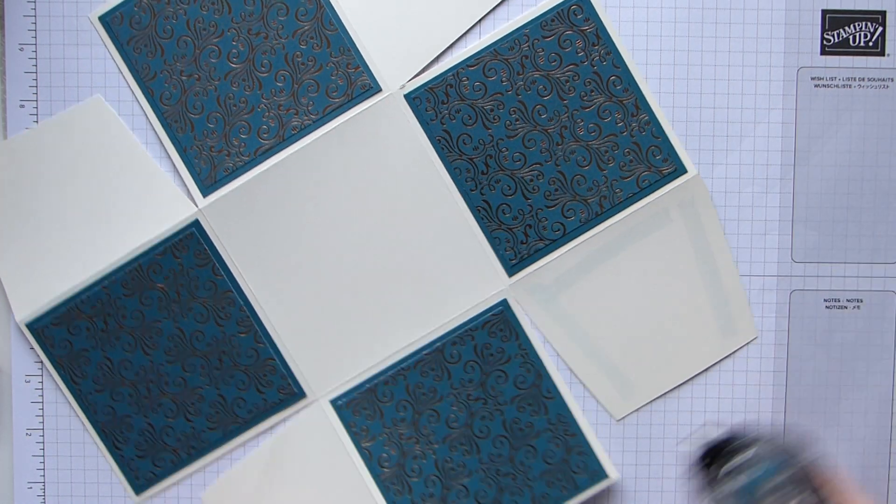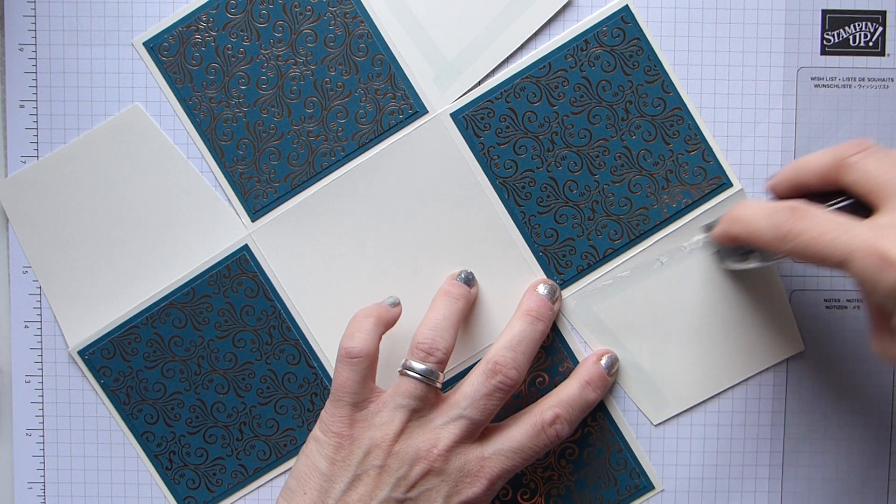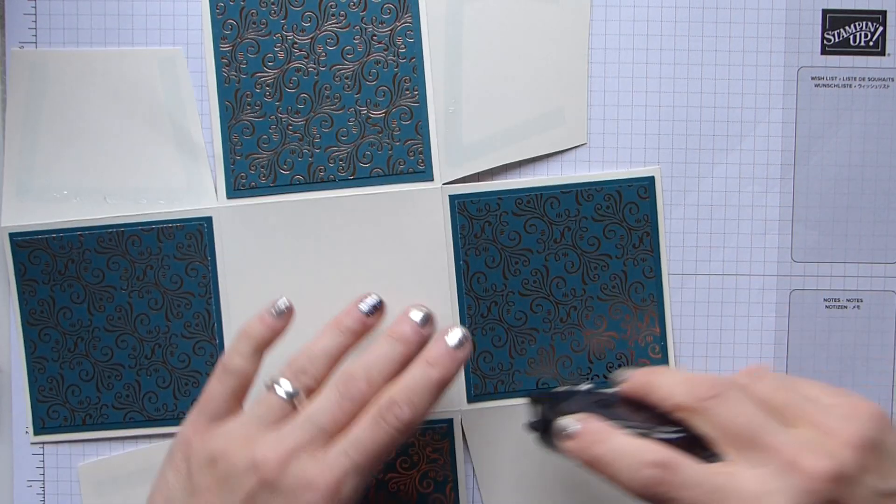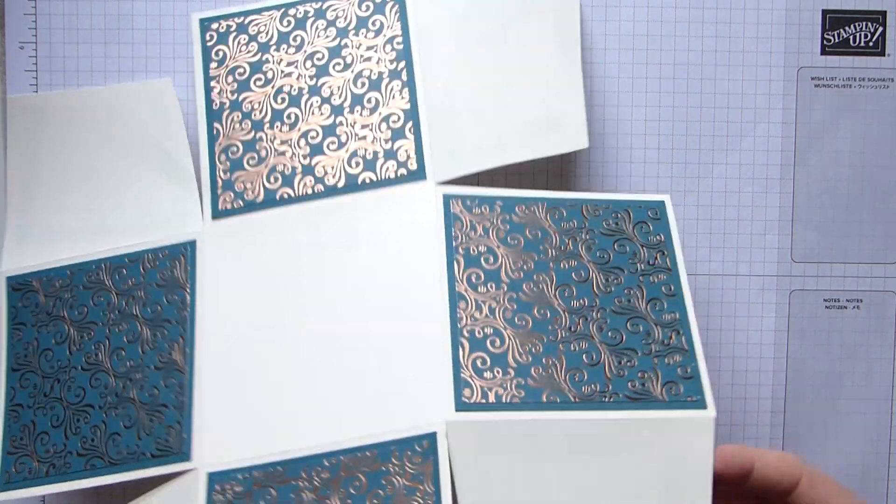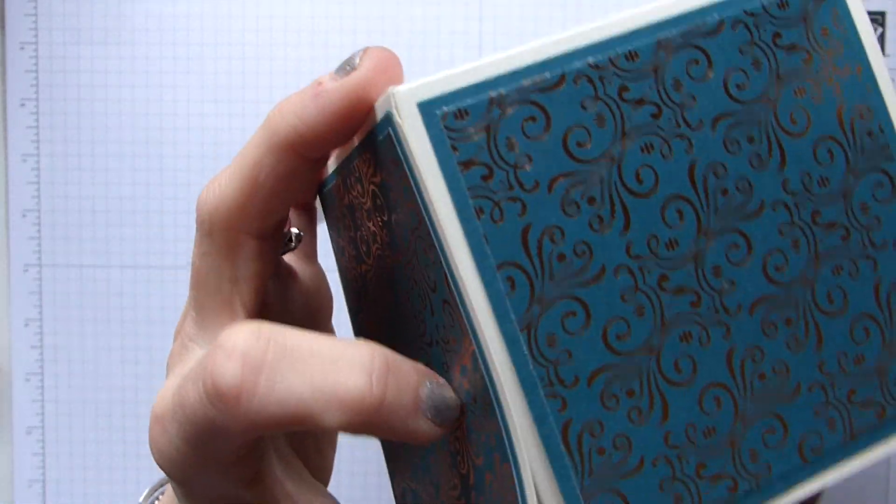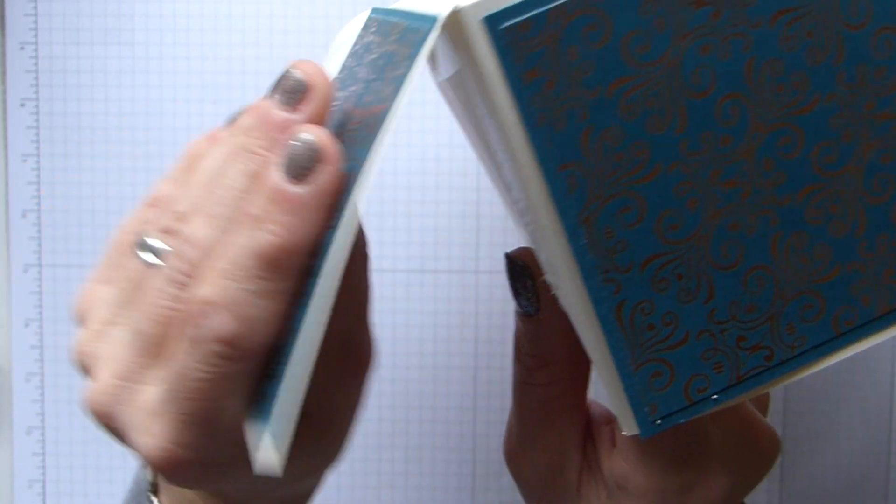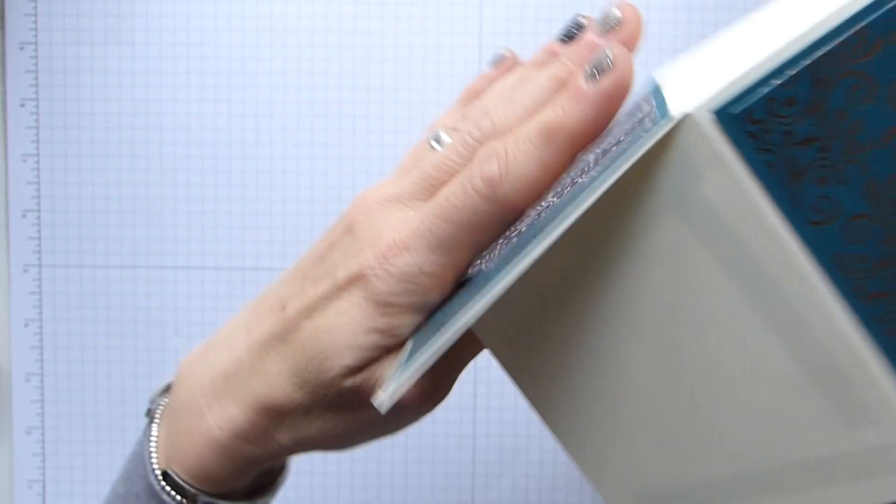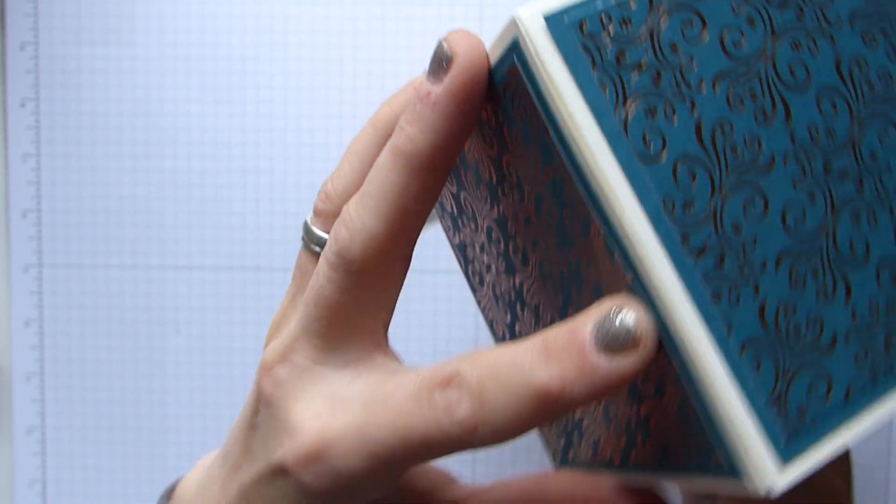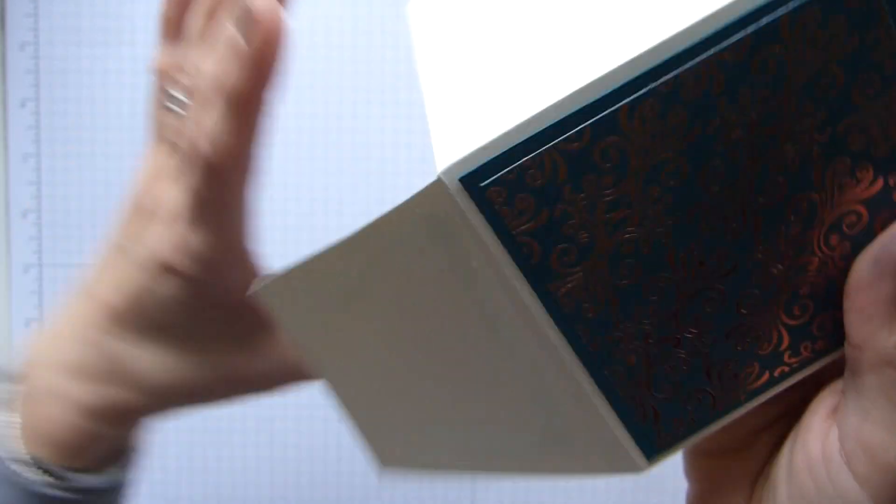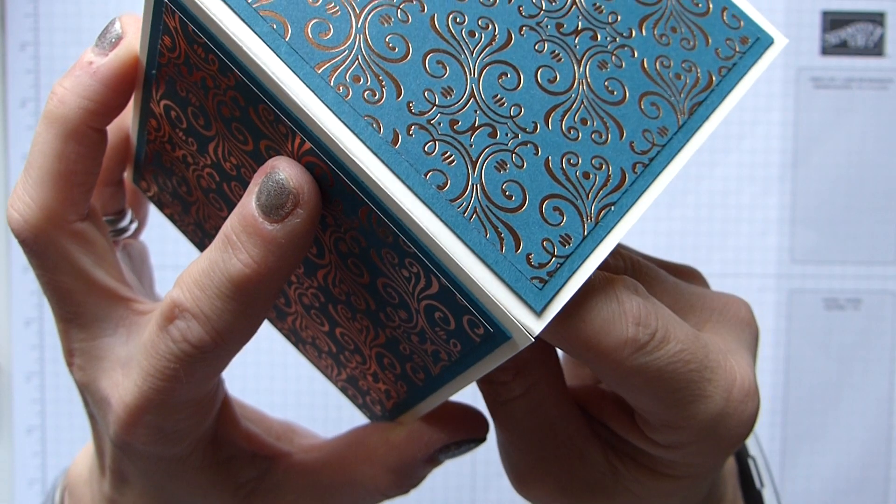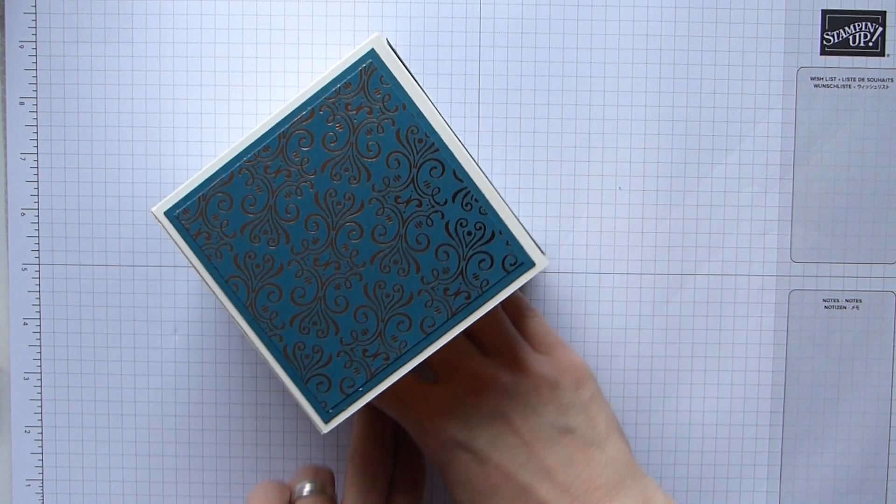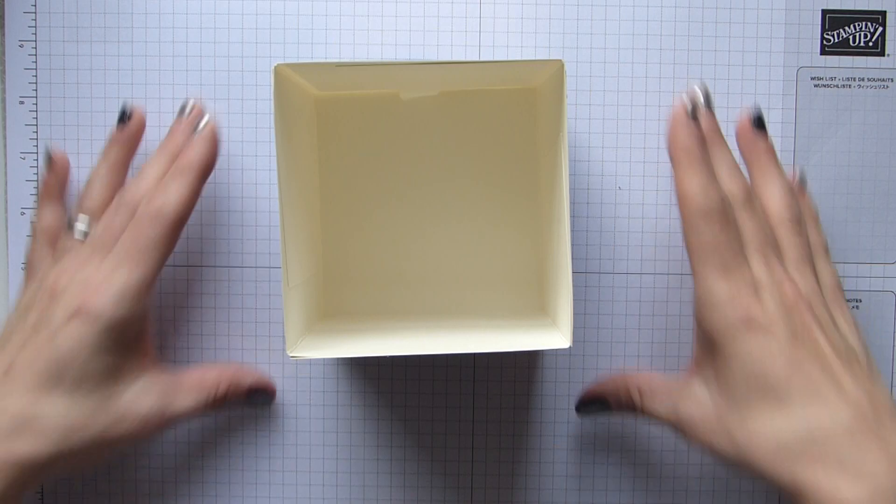So that one on there, and then the last one on this side. And then again, you can either use Tear and Tape, wet glue, whatever. I'm just going to use snail for today because I do feel that this will work just as well.